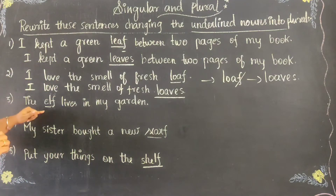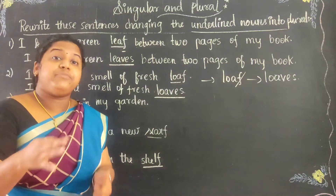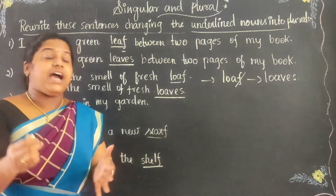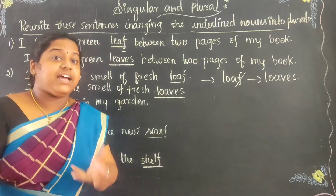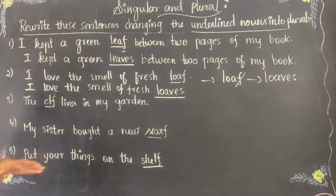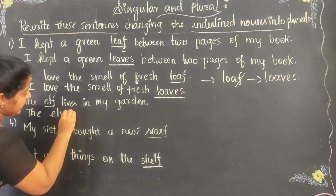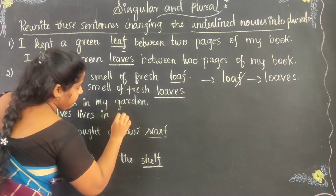What about the third one? The elf lives in my garden. An elf refers to small tiny persons — like in the Smurf movie. Which is the underlined word? Elf. The word ends with F, so it changes into E-L-V-E-S. We drop the F and add V-E-S. The elves live in my garden.